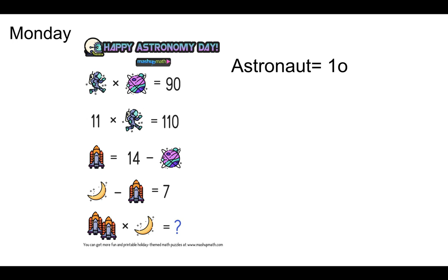Now, if I know that the astronaut is 10, 10 times what is 90? 9. The planet's worth 9.